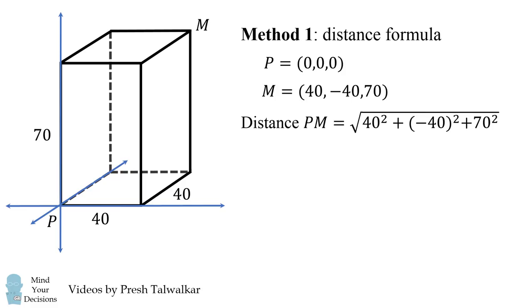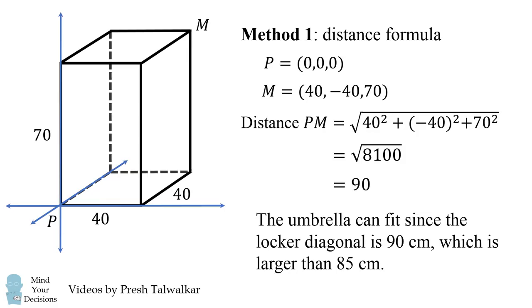We can find the distance of PM by using the distance formula. This becomes the square root of 40² + (-40)² + 70². This simplifies to the square root of 8100, which equals 90. Therefore the umbrella can fit because the locker diagonal is 90 centimeters, which is larger than the umbrella, which is 85 centimeters.